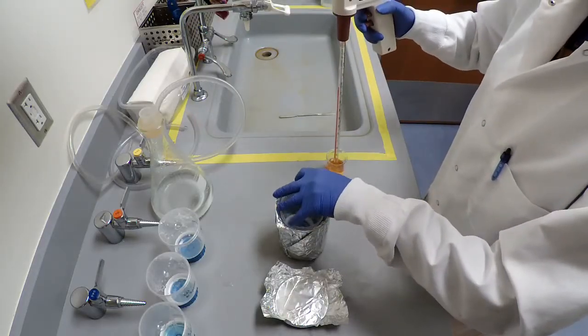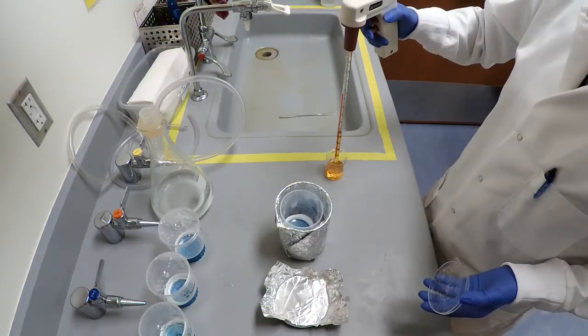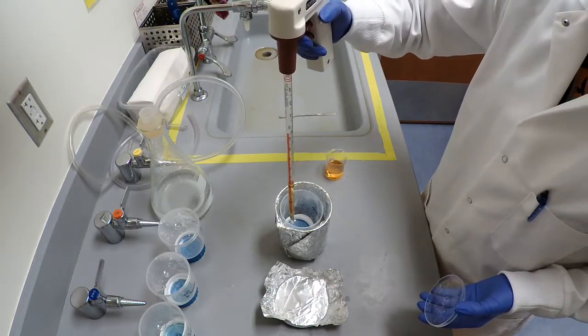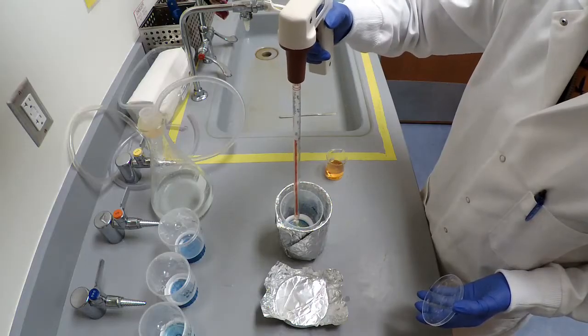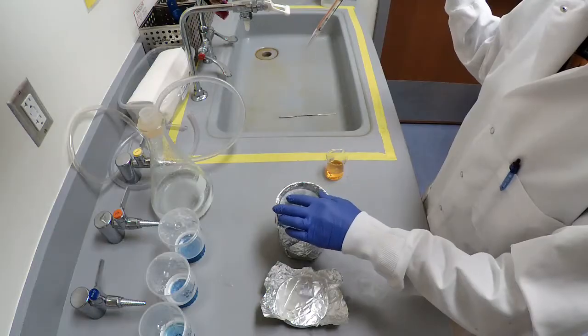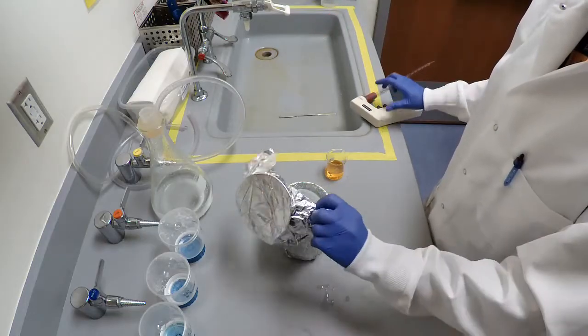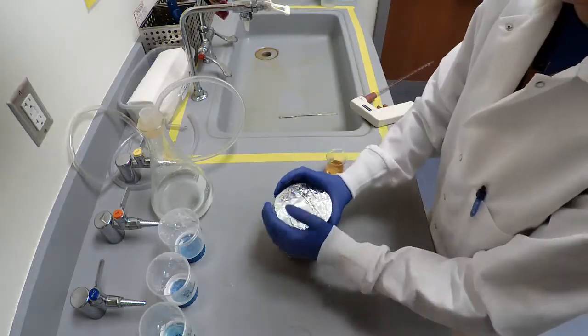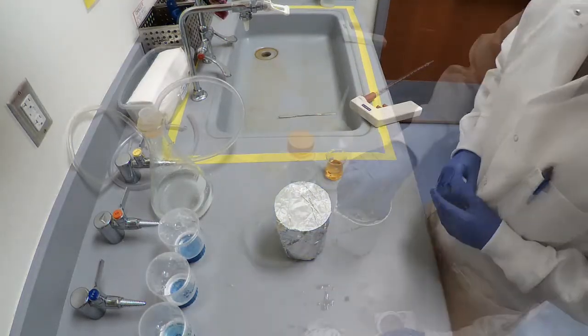Add 5 ml of Nile red at a concentration of 10 micrograms per ml. Cover with a foil lid and incubate at room temperature for 30 minutes.